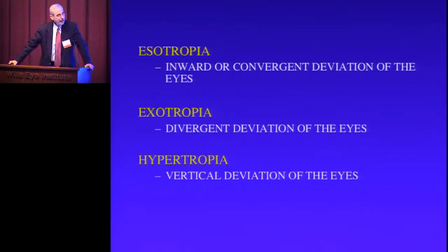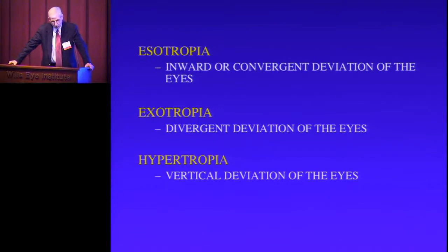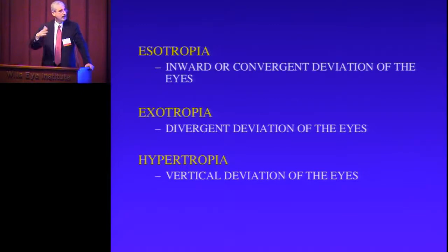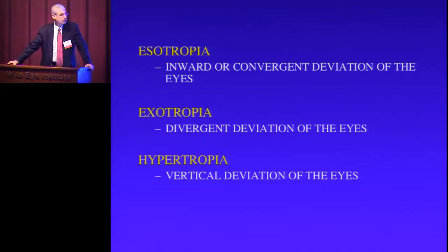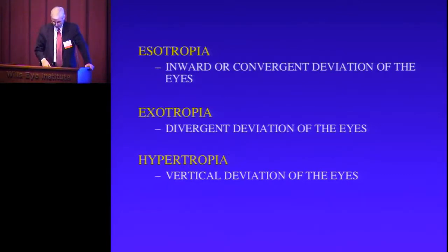The types of manifest deviations are esotropia, or a convergent deviation of the eyes; an exotropia, or a divergent deviation of the eyes; and a hypertropia or a hypotropia — a vertical deviation of the eyes.